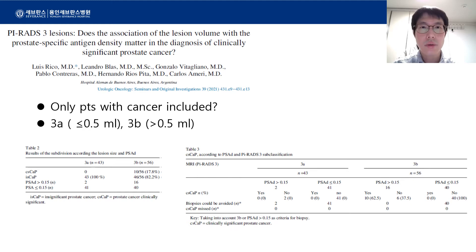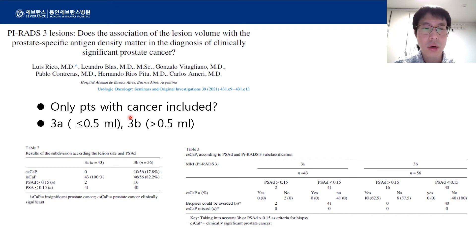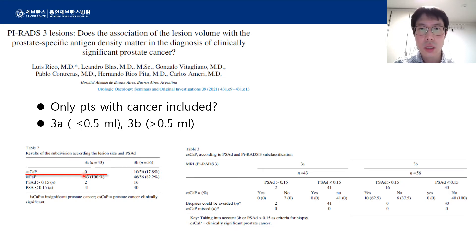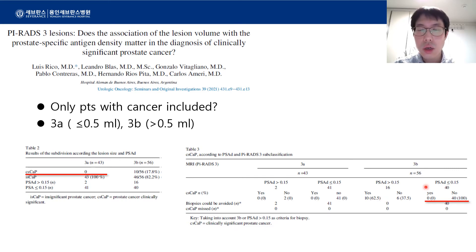The characteristics of the lesions themselves may also be used as a parameter. This is a study from Argentina which suggests that the size of lesions matters. Although the study included only patients diagnosed with prostate cancer, it is interesting that none of the lesions smaller than 0.5 milliliters were clinically significant, and among lesions greater than 0.5 milliliters, none were clinically significant if the PSA density was lower than 0.15.